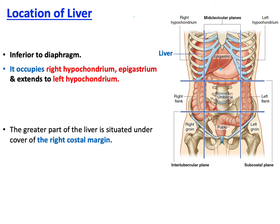Before starting, I would remind you about the division of the abdomen. In this figure, you can see the nine-division pattern of the abdomen. The abdomen can also be divided into four regions using the four-quadrant pattern, as well as into nine regions using specific planes.